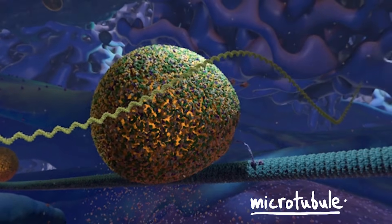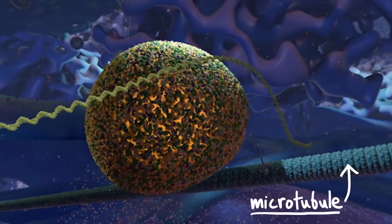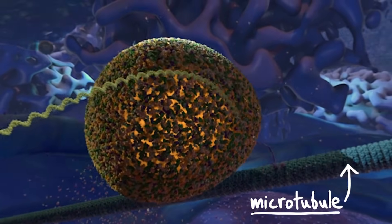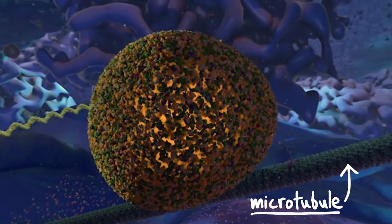Microtubules are almost like train tracks. The vesicle will get walked along this microtubule until it gets where it needs to go.